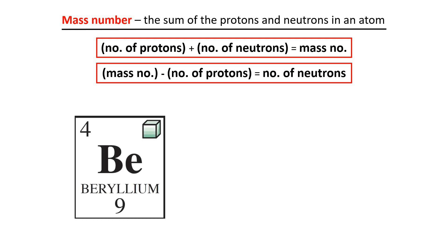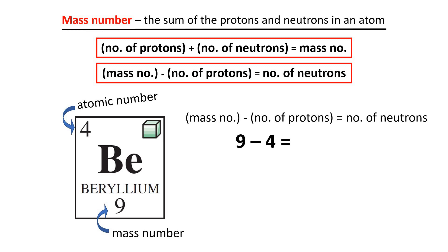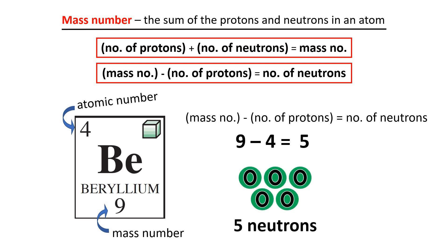Let's try this. The element beryllium has an atomic number of 4 and a mass number of 9. To find the number of neutrons, we use: mass number minus number of protons equals number of neutrons. The mass number is 9, and since the atomic number equals the number of protons, this is 9 minus 4, which equals 5 neutrons. So beryllium has 5 neutrons.